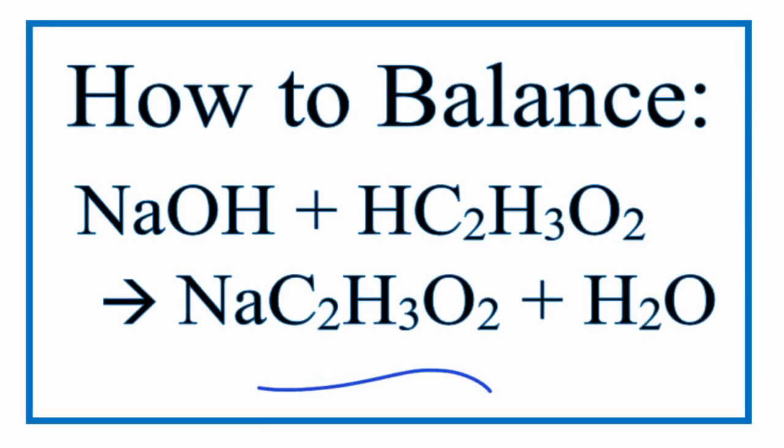In this neutralization reaction, we have sodium hydroxide, NaOH, plus acetic acid, HC2H3O2. That C2H3O2, that's the acetate ion, and that H in front, the hydrogen, tells us that it's an acid.